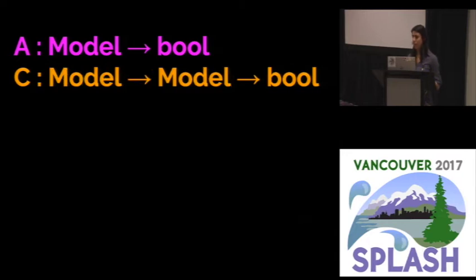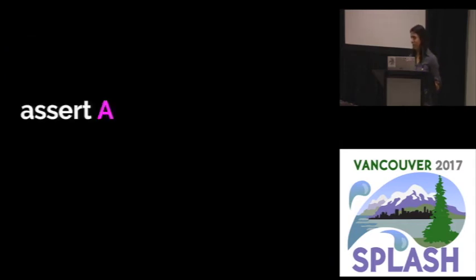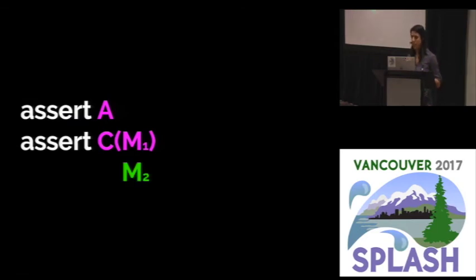And the key insight to this loop is that while the constraint C takes a pair of models and returns a boolean, we can also think of it in its curried form as a model to model to boolean. When we then call the solver and we get a model, we can curry it and get an assertion. So this assertion says the next model should be different. So this is exactly what the loop does. It asserts A, gets back a model M1, asserts A and C of M1, gets back a model M2, asserts A, C of M1, C of M2, and so on.